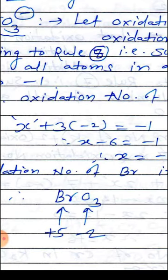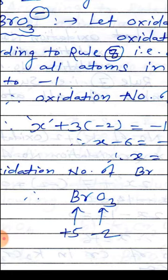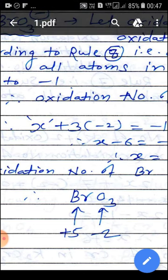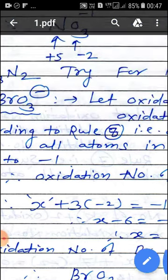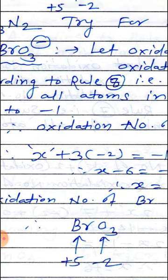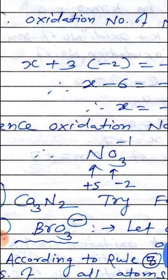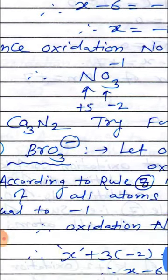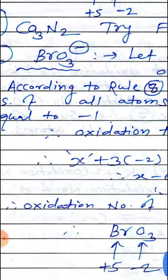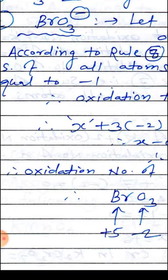We assign the oxidation number to the molecule or ion, showing oxidation numbers with arrows: for BrO₃⁻, bromine has oxidation number plus 5 and oxygen has minus 2. These are the examples to calculate oxidation number. We will see more examples in the next video. Thank you.